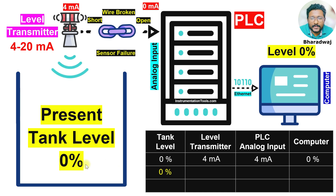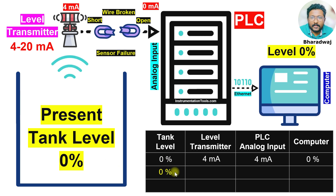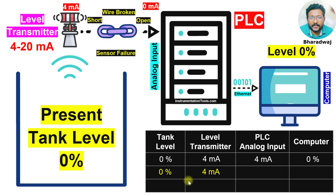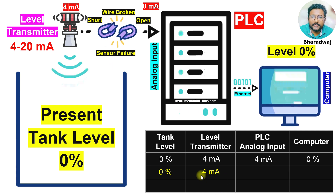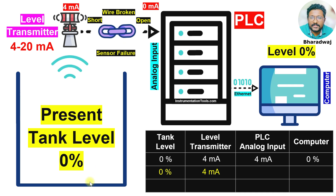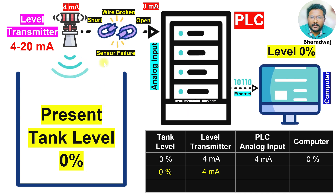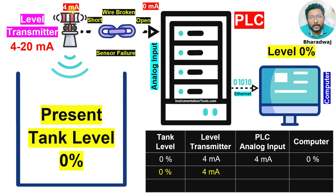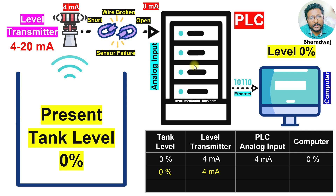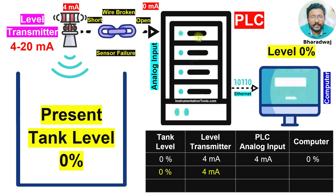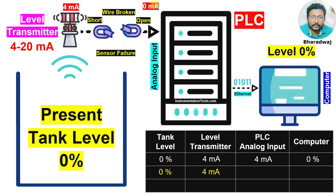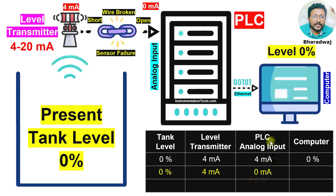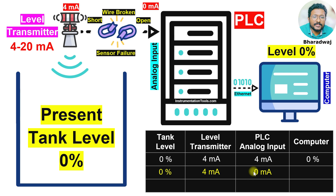The tank level is still zero percent and the level transmitter status is 4 milliamperes, because the tank level is zero. But the wire is broken, so the 4 milliamperes will not reach the PLC. The PLC receives zero instead of four — we can see the PLC receiving zero milliamperes.